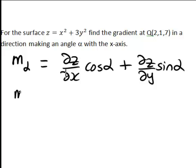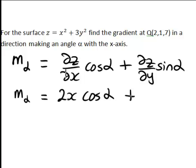In this expression Z equals X squared plus 3Y squared, ∂Z/∂X is 2X, so M_alpha becomes 2X·cos(alpha). And ∂Z/∂Y is 6Y, so plus 6Y·sin(alpha).